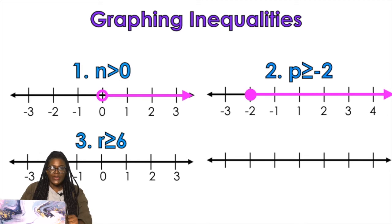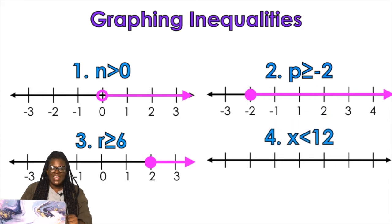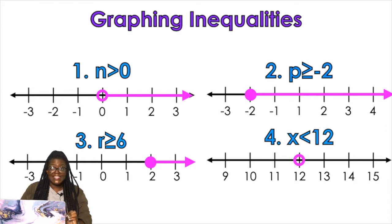R is greater than or equal to six. I'm gonna look at my number line, find six — closed circle because it has a little line under it. And then x is less than 12. I'm gonna find 12 on the number line, open circle because there's no line, and it's less than so we shade to the left.